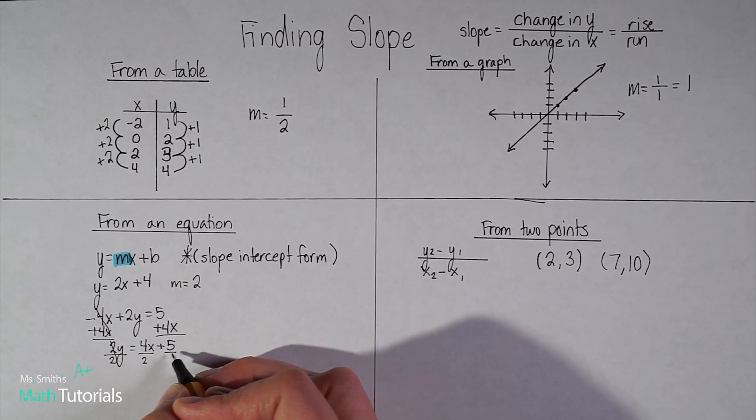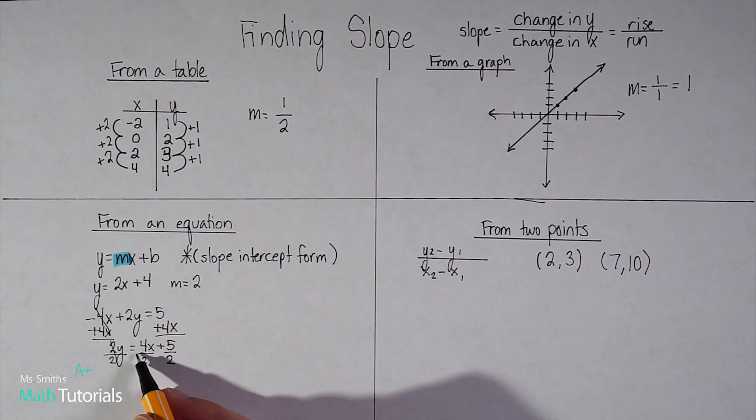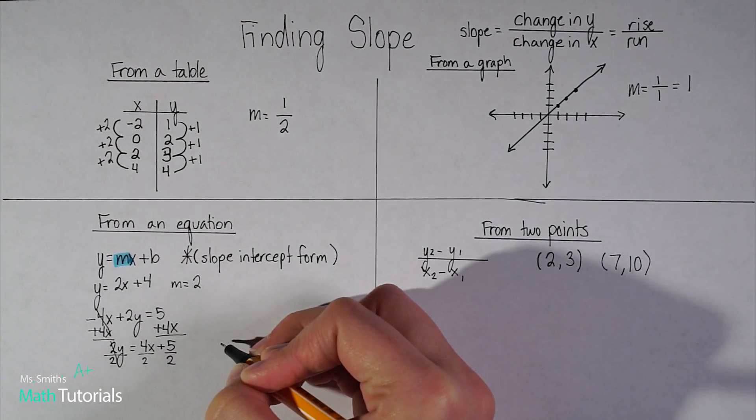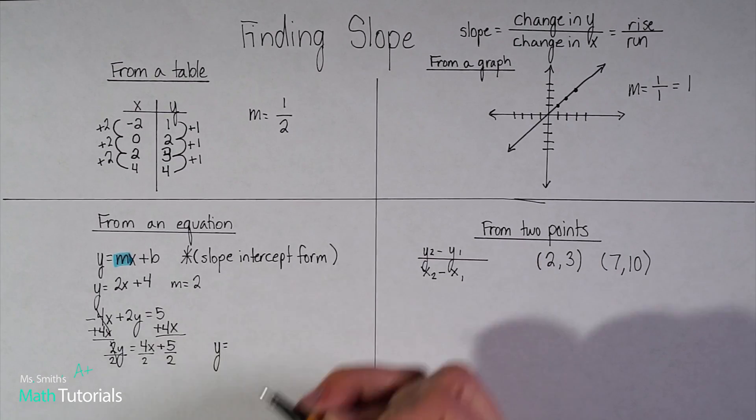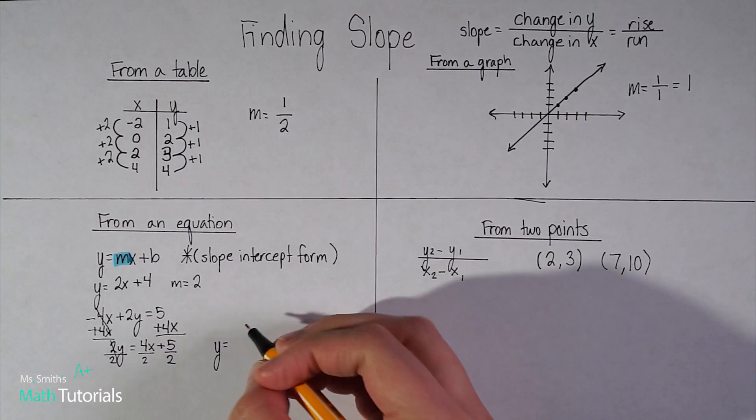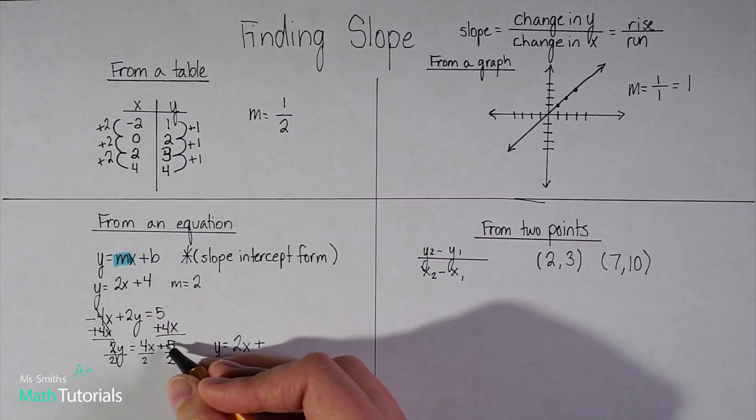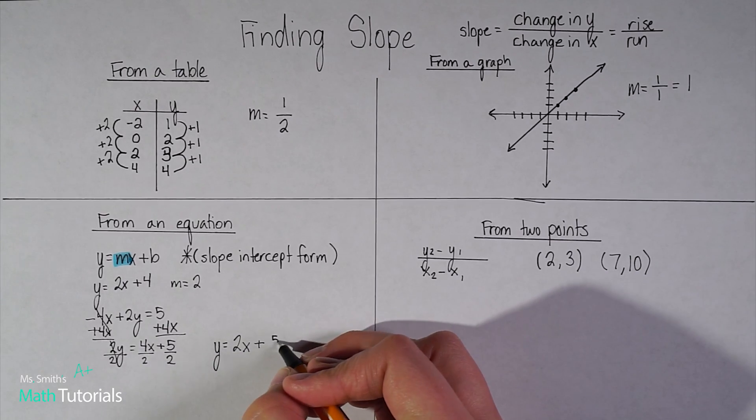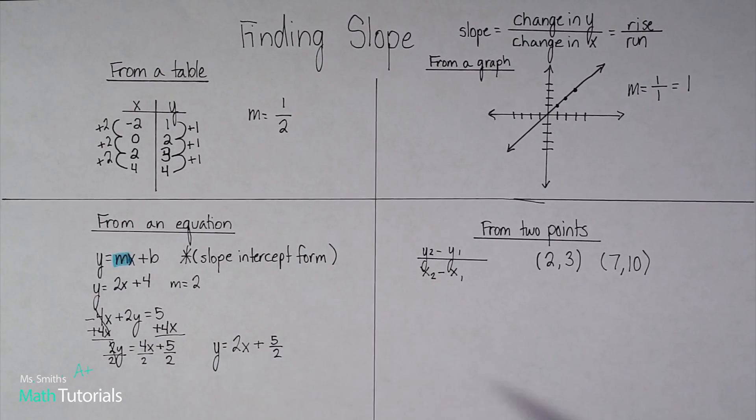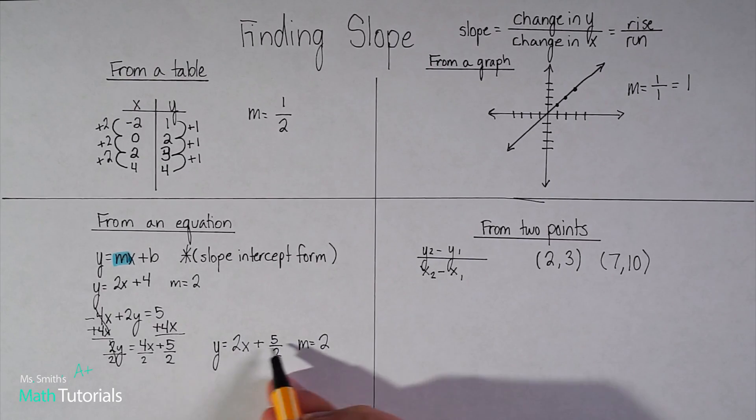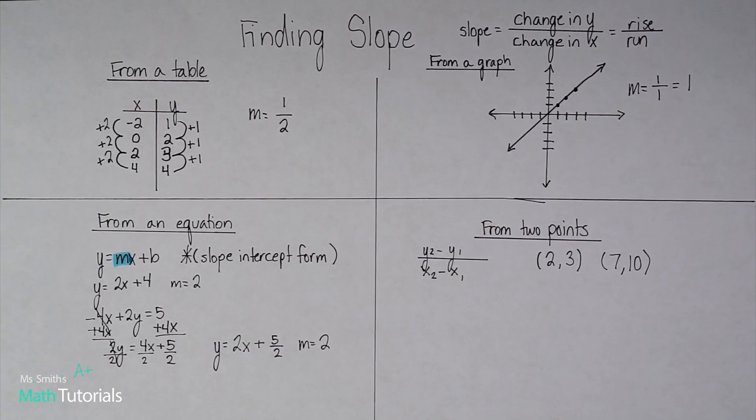Now lastly, I need to divide this 2 out because my y is almost alone, but not quite. And I like to divide it by each part of the problem. Some teachers will just do a long line with a 2 underneath. I like showing that it's each part of the problem. So we would have, I'm going to just write over here, y equals 4 divided by 2. That can reduce to 2x plus, and I can't reduce 5 over 2 anymore. So I'll just leave it in its fraction form. So in this case, I've rewritten this in slope intercept form, and my slope would be 2. Okay, this, we could absolutely take this and graph it on a graph.